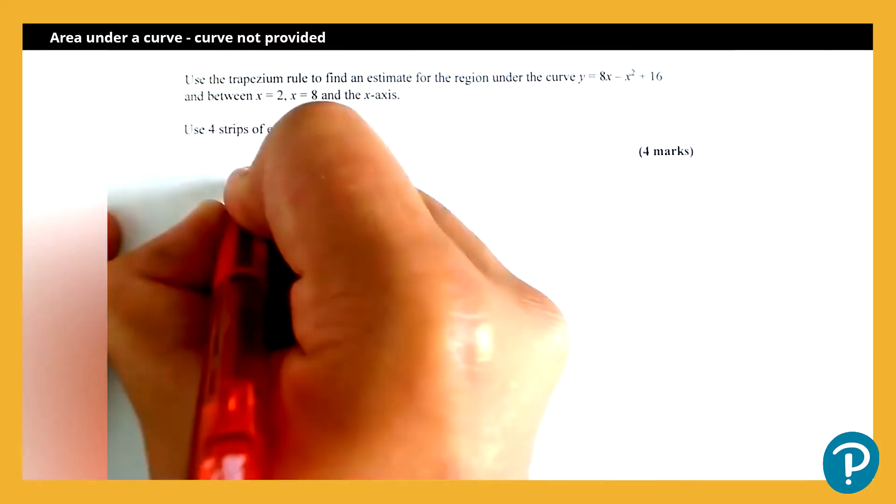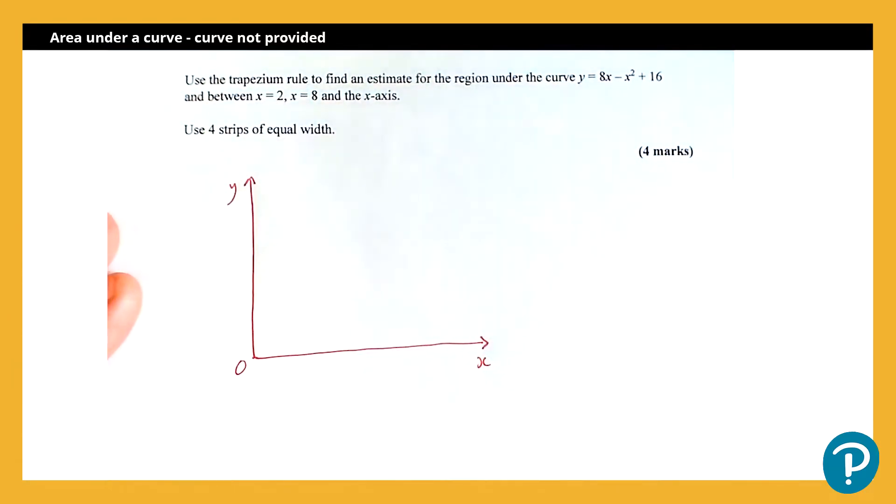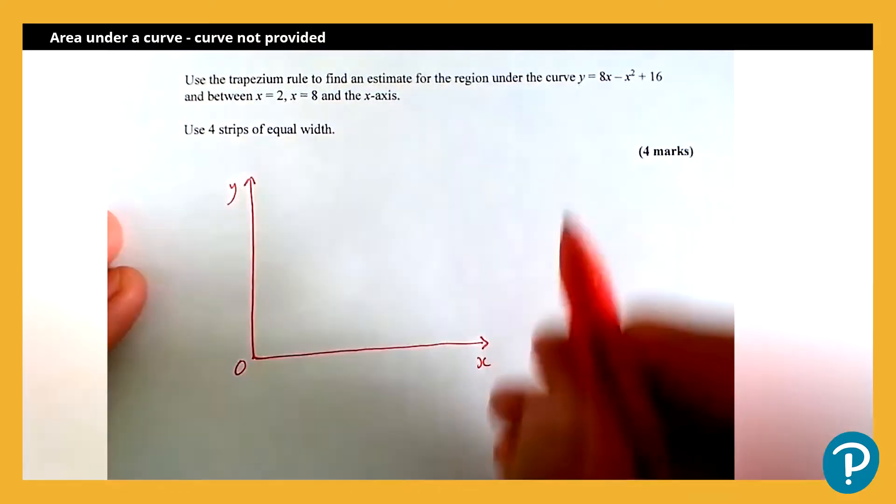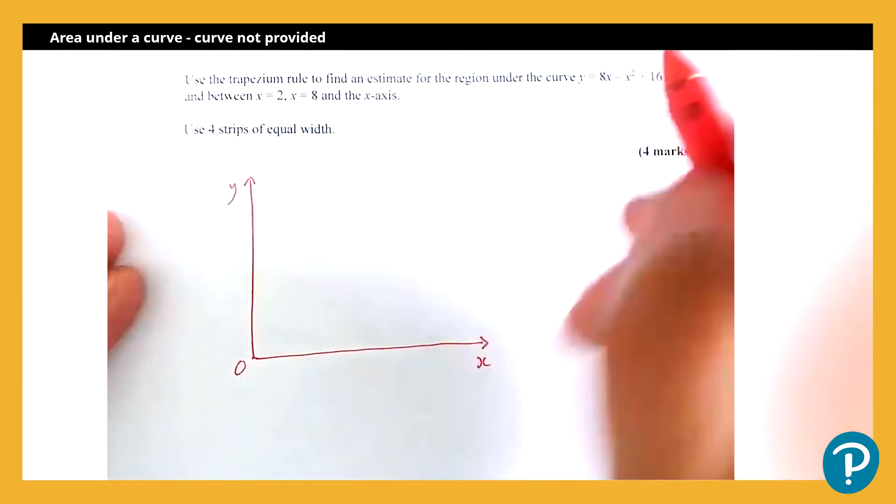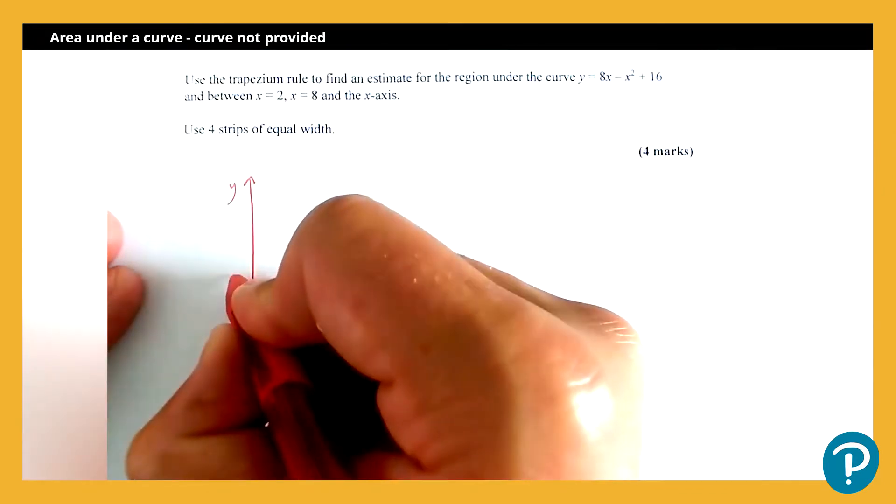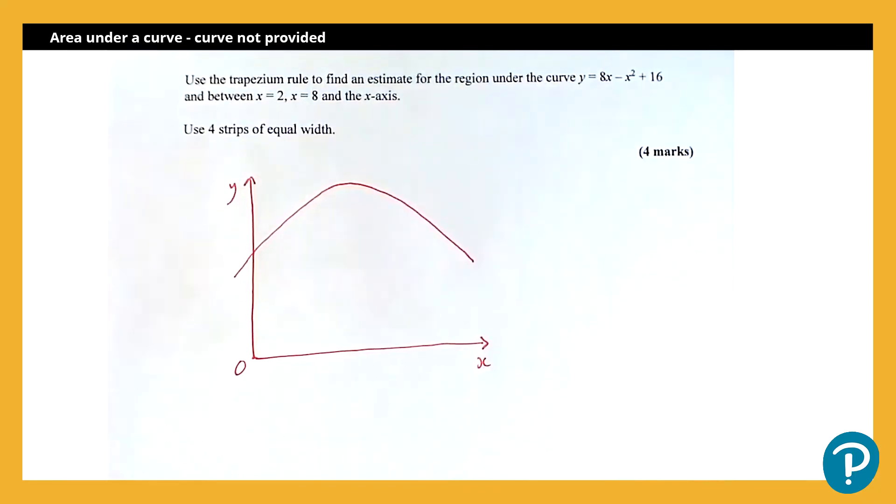This is only a sketch, so that's why I've not got my ruler out. So we've got x and y, we've got the origin. I know it's a negative quadratic, because it's subtract x squared there. It's got a y intercept of 16. So it's going to look something like that, and I'm not too stressed about exactly.